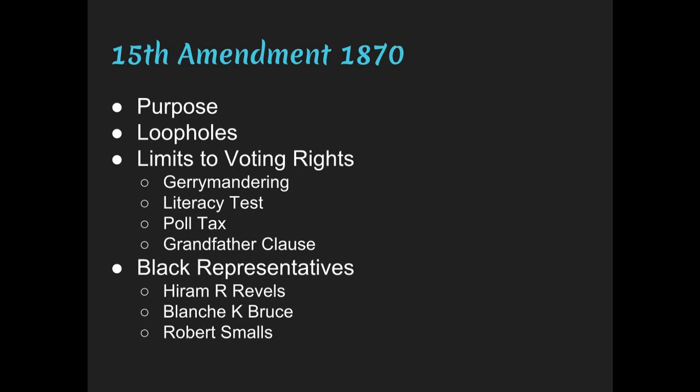The 15th Amendment was passed in 1869 and ratified in 1870 during the presidency of Ulysses S. Grant. Its purpose was to ensure suffrage for black males and strengthen Republican control in Southern states. However, there were loopholes — it didn't guarantee the right to hold office, and voting requirements were not uniform throughout the country. Measures that kept blacks from voting as guaranteed by the 15th Amendment would persist for 95 more years until the Voting Rights Act of 1965. These included poll taxes, gerrymandering, the grandfather clause, and literacy tests.